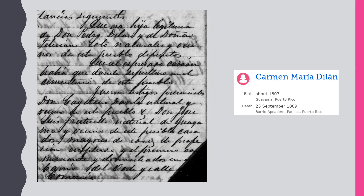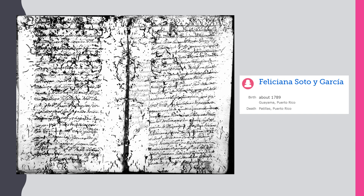Blowing up the document, you can see that Carmen Dilán was the legitimate child of Pedro Dilán and Feliciana Soto, both listed as living in Patillas. Carmen was born in Guayama in 1807. Her mother's document was difficult to navigate, but it identifies the parents clearly.